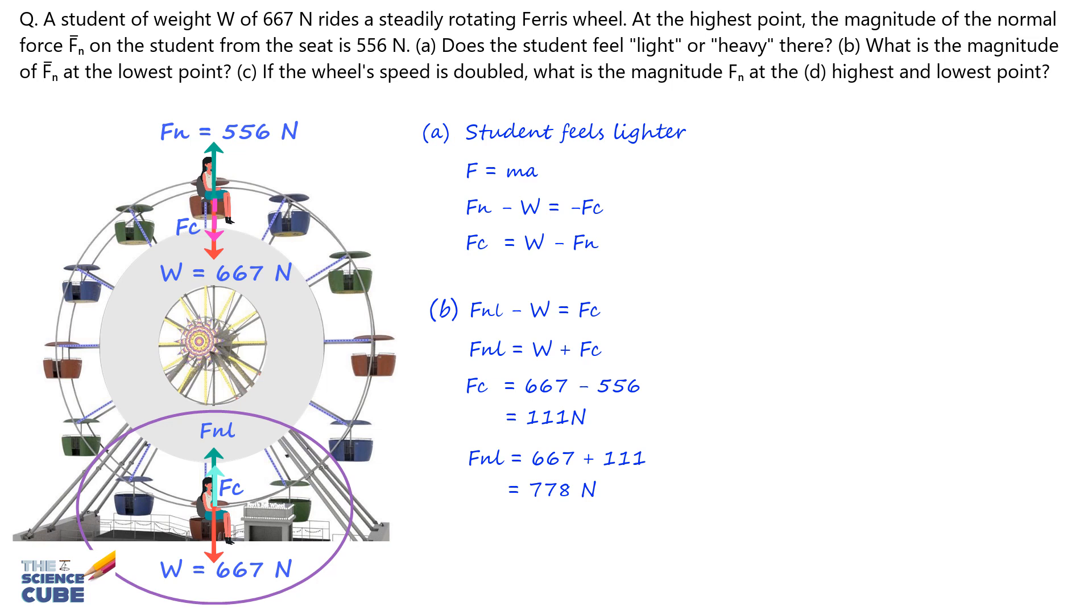In part C, doubling the speed of the wheel affects the centripetal force significantly, since the centripetal force Fc depends on the square of the speed or V squared.